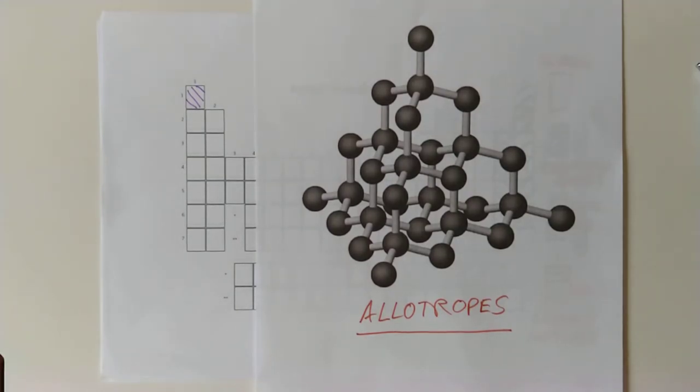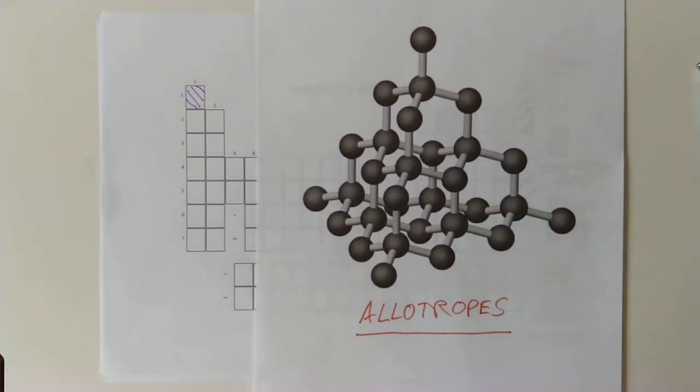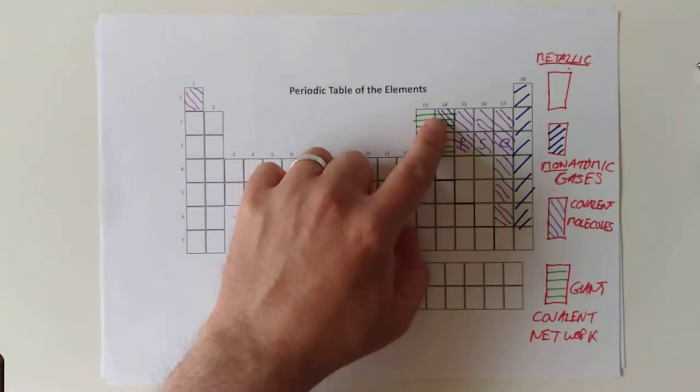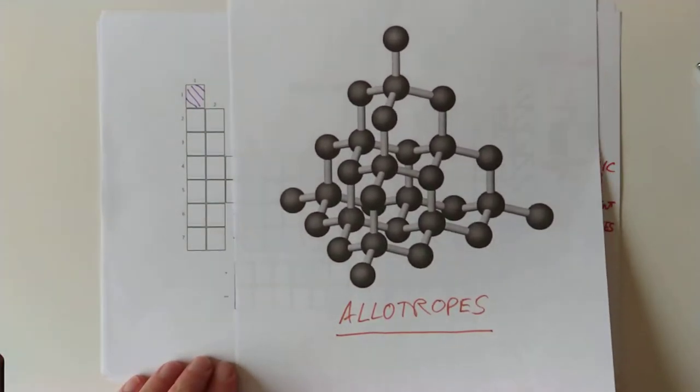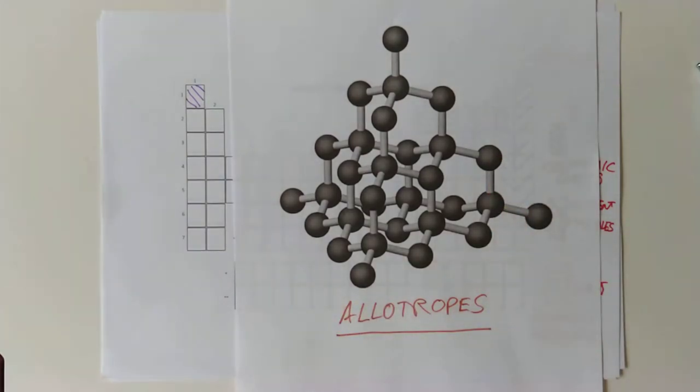So this is the giant covalent network version of carbon, in the form of diamond. You know those properties of diamond: hardest substance in the world in terms of scratchiness, transparent, really high refractive index if you know that from physics.